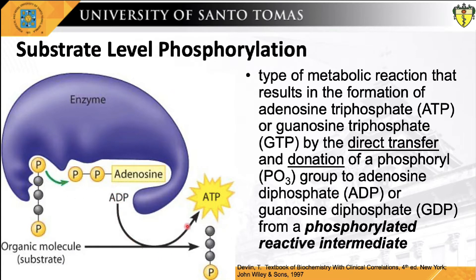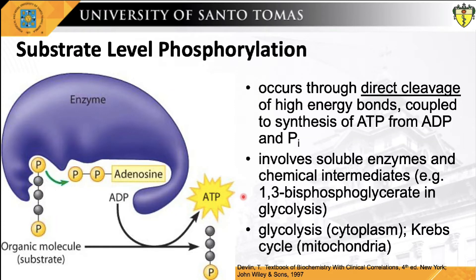This energy is used to transfer a phosphoryl group to ADP or GDP from another phosphorylated compound. Unlike oxidative phosphorylation, oxidation and phosphorylation are not coupled in substrate-level phosphorylation, and reactive intermediates are most often gained during oxidation in catabolism. Most ATP is generated by oxidative phosphorylation in aerobic or anaerobic respiration, while substrate-level phosphorylation provides a quicker, less efficient source of ATP independent of external electron acceptors. It occurs through direct leverage of high-energy bonds, involving soluble enzymes and chemical intermediates such as 1,3-bisphosphoglycerate in glycolysis.